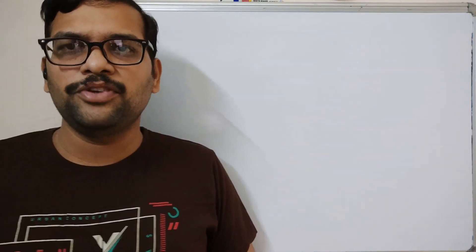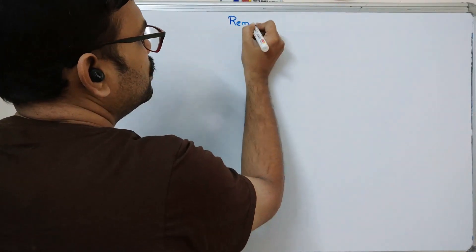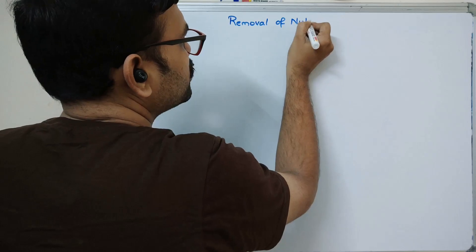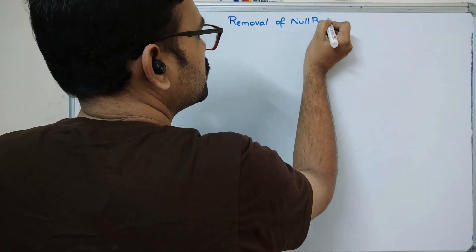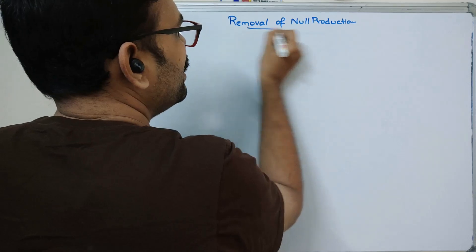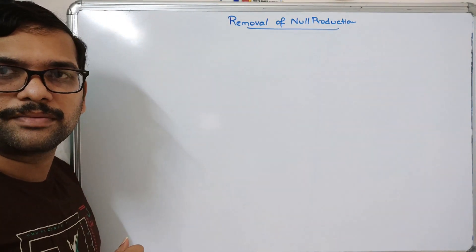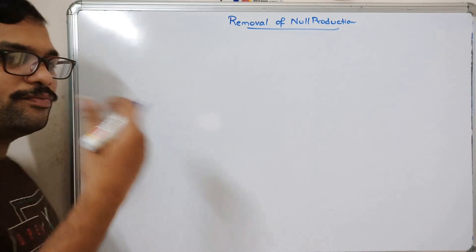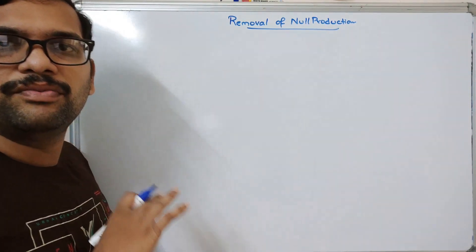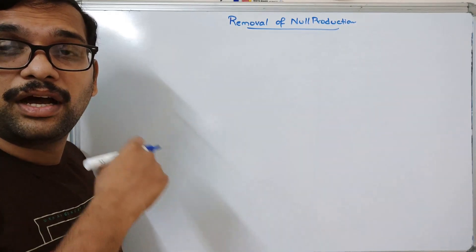Removal of null productions or epsilon productions: if our production rules contain any epsilon production, we simply have to remove that epsilon production. How can we remove it? By substituting epsilon into that particular variable, we can remove the epsilon production. We have to go through all the combinations.